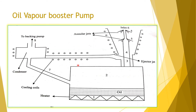This is the diagram of an oil vapor booster pump. The oil enters through the inlet port into the boiler, where a heater is placed below. After heating, vapors are produced and ejected through the nozzles. These vapors flow through the annular jets — similar to a diffusion pump — and cooling coils on the pump walls help condense the vapor. The condensed liquid and outlet gas flow through to the backing pump via the outlet valve. The condensed liquid flows back to the boiler.